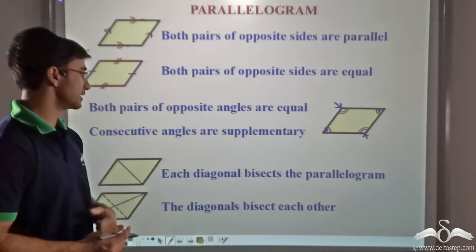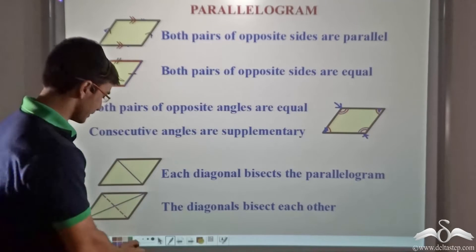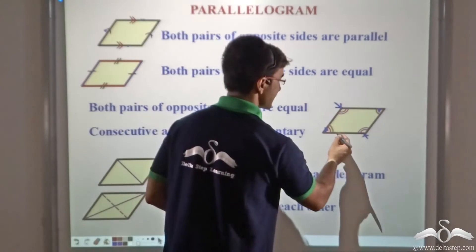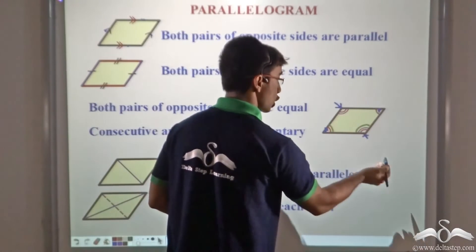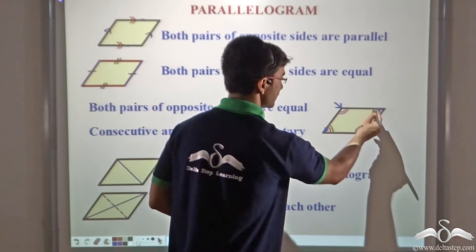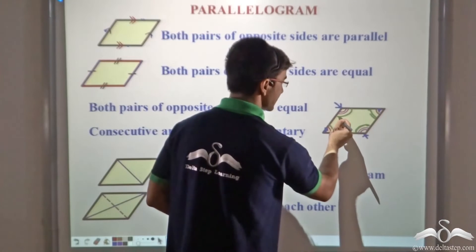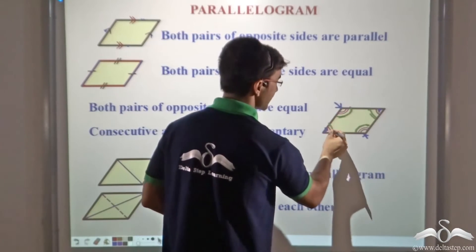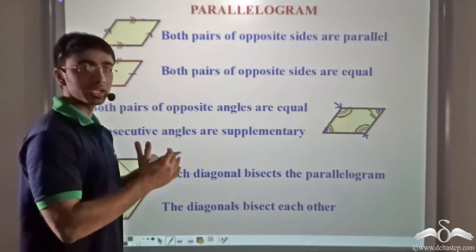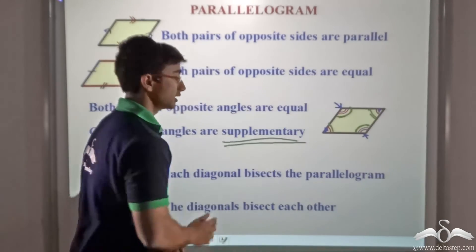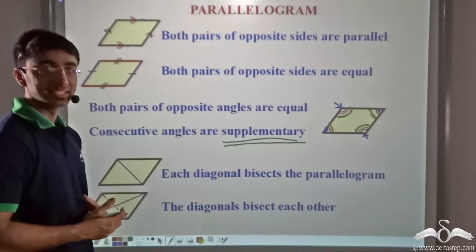Consecutive angles are supplementary. So what do I mean when I say consecutive angles? Consecutive angles can be this angle and this angle, or this angle and this angle, or this angle and this angle, or even this and this angle. So any two consecutive interior angles of a parallelogram are supplementary or add up to 180 degrees.